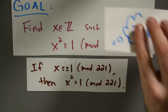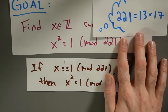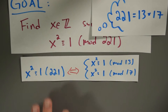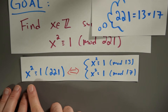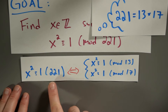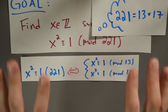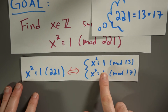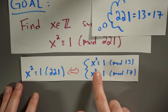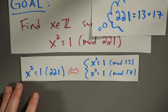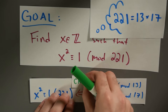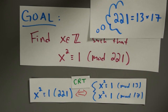To find some others, we want to recall that 221 is 13 times 17, and consequently the condition x squared≡1 (mod 221) is exactly the same as x squared≡1 (mod 13) and x squared≡1 (mod 17). We can do this with the Chinese Remainder Theorem — this implication follows precisely from it.